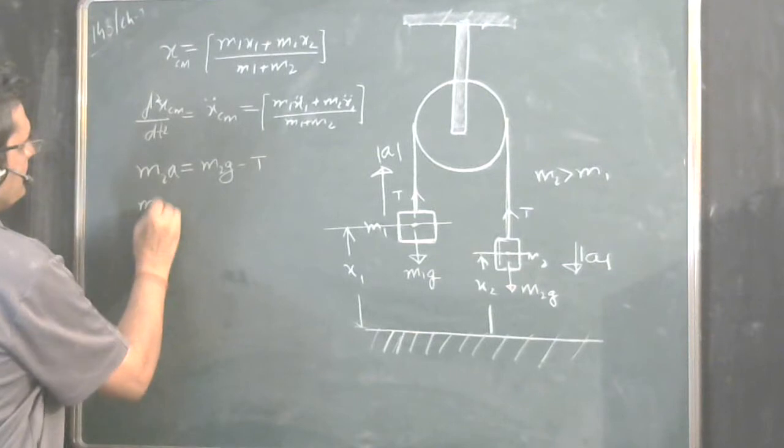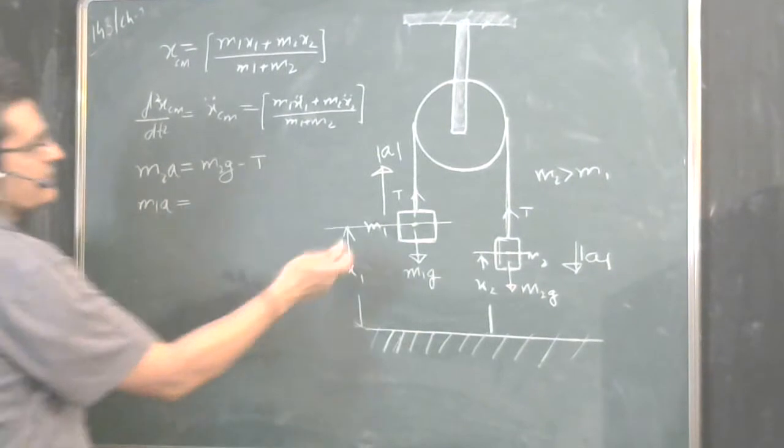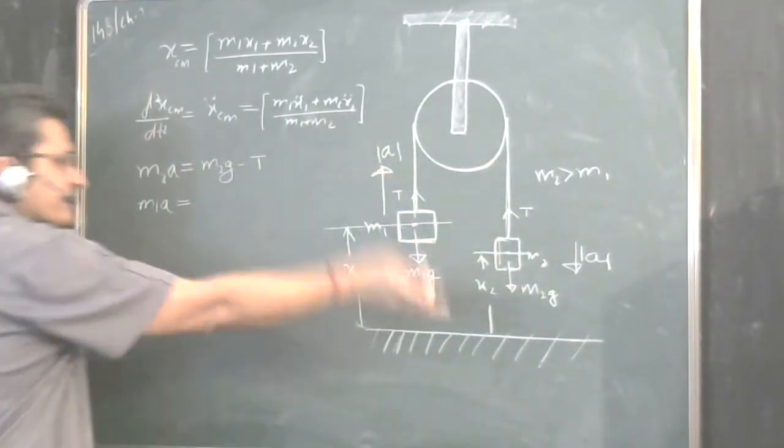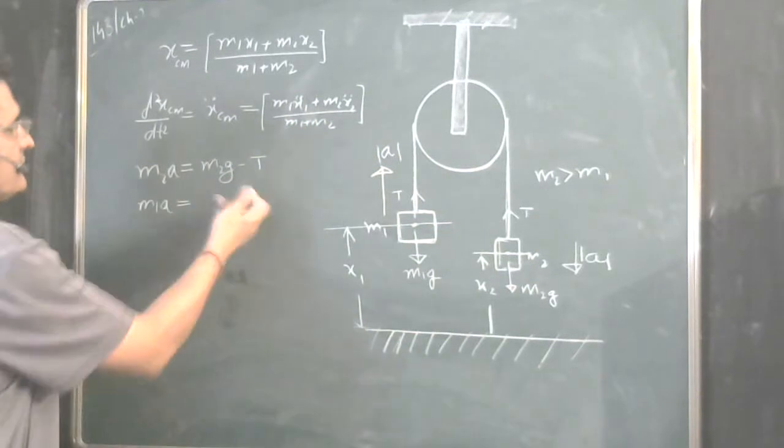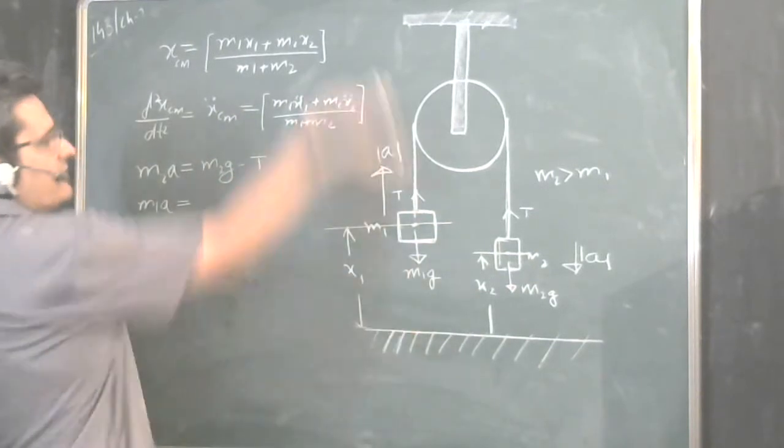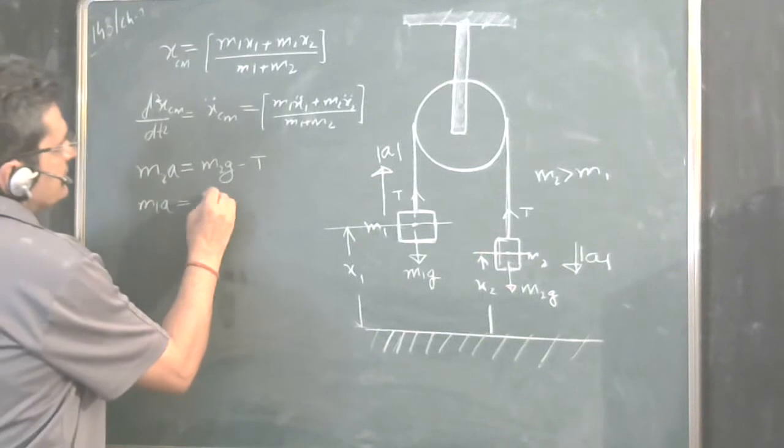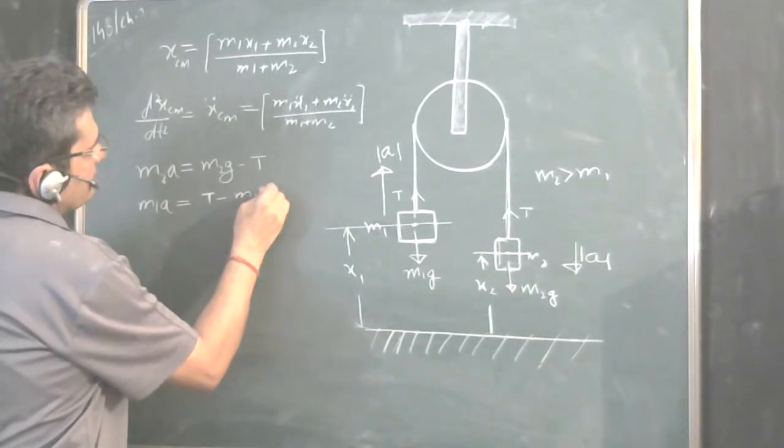Write the equation for this one. It will be M1a. We are taking the magnitude, not the direction, because direction, we are already considering it while writing the equation. We are already considering direction upwards. So, M1a is equal to T minus M1g.